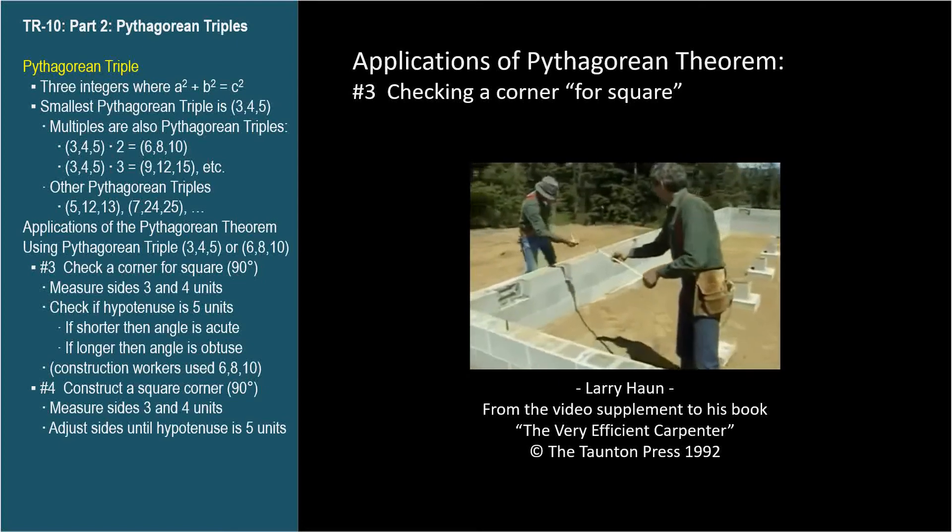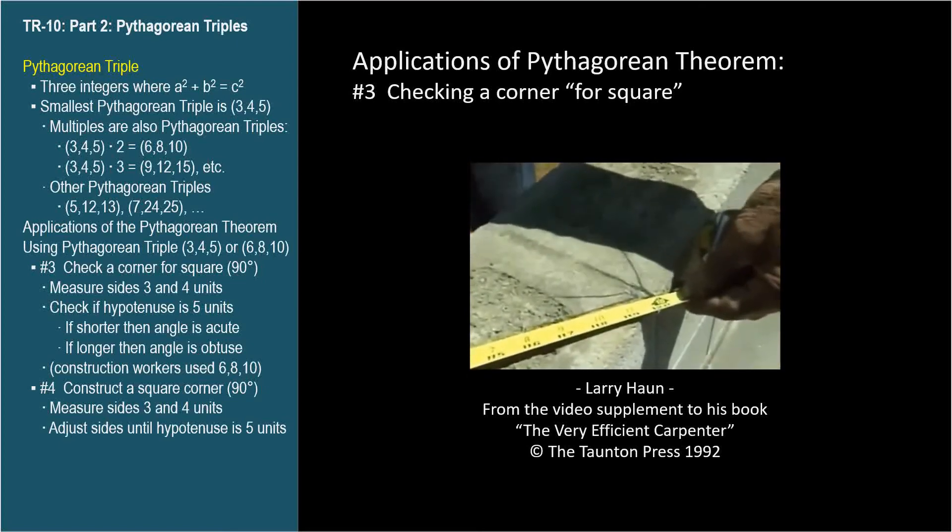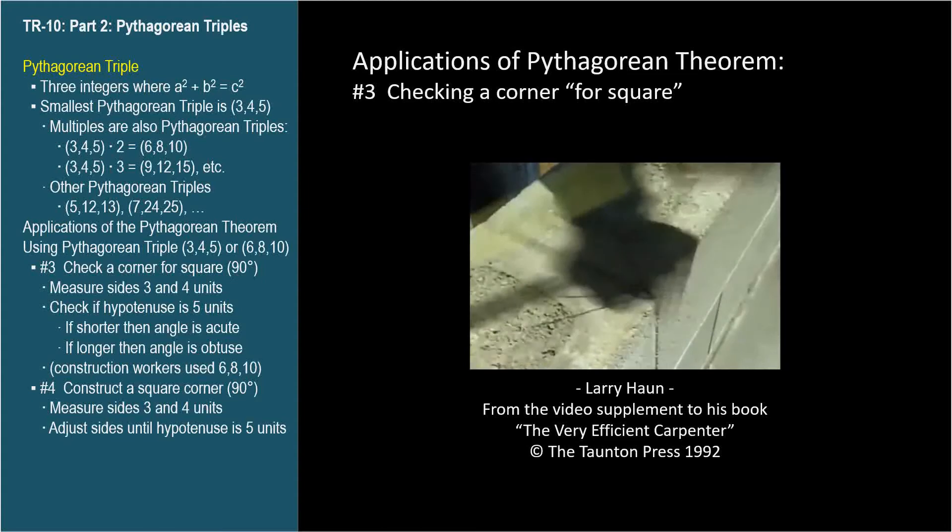Now, if they didn't, we'll have to adjust the sill in or out a bit to compensate. Looks great, Joe, it's right on 10 foot. Since their measured hypotenuse was exactly 10 feet, they knew the corner was perfectly square.